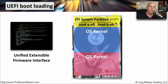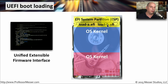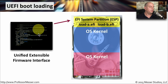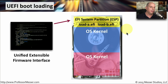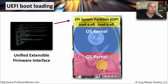Instead, on a UEFI BIOS you have an EFI system partition, also called the ESP. The system partition may contain configuration files to load particular operating systems — for example, a loadA.EFI and a loadB.EFI. The BIOS accesses the ESP and will probably prompt you to choose which operating system you'd like to run, such as loadB.EFI for the second partition or loadA.EFI for the first.